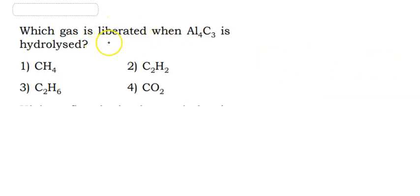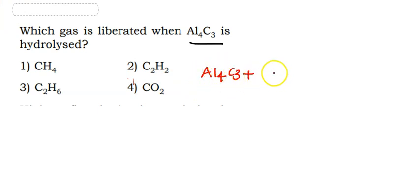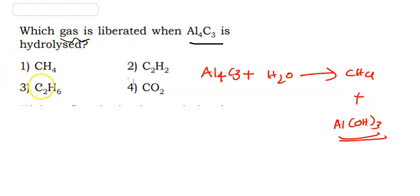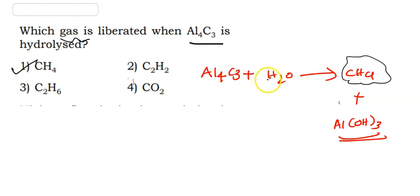Which gas is liberated when Al4C3 is hydrolyzed? When Al4C3 reacts with water, methane gas (CH4) is produced. So the answer is option 1, CH4.